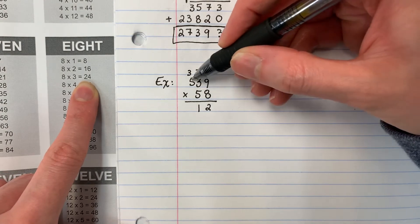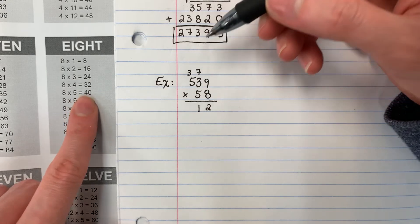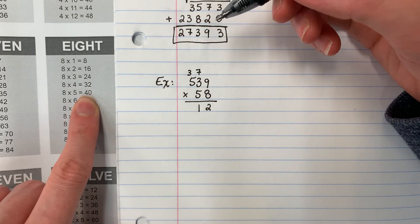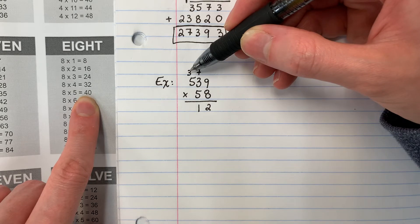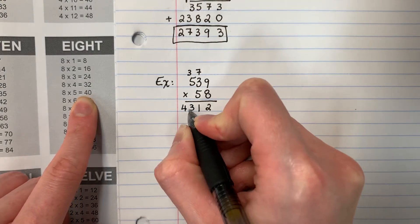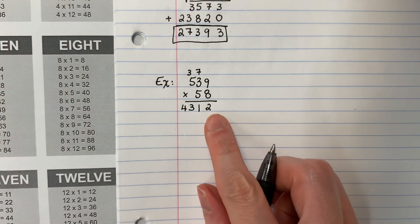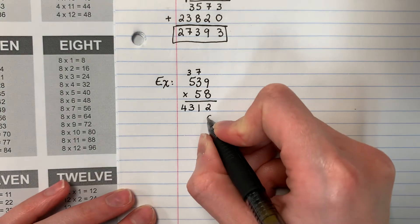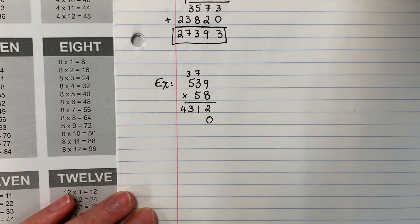Eight times five. Ocho por cinco. Forty. Cuarenta. Forty plus three, cuarenta más tres, forty-three. Cuarenta y tres. What do I put here? ¿Qué pongo aquí? Zero. You need to put a zero. Necesitamos poner cero. And we're done with these — y terminamos con estos.